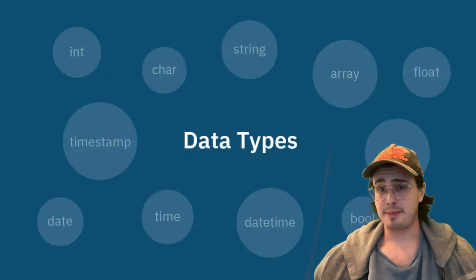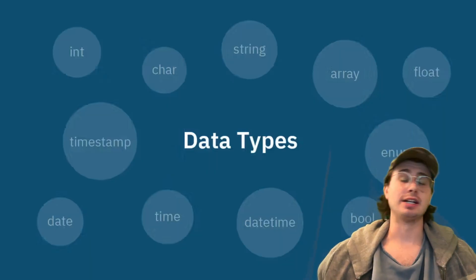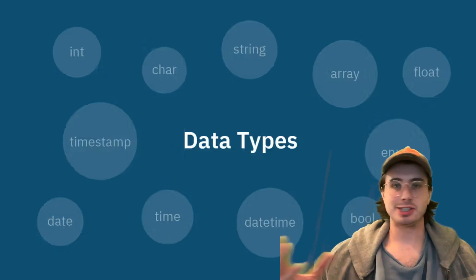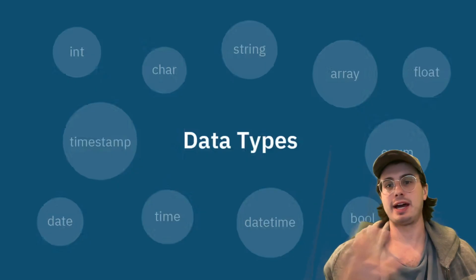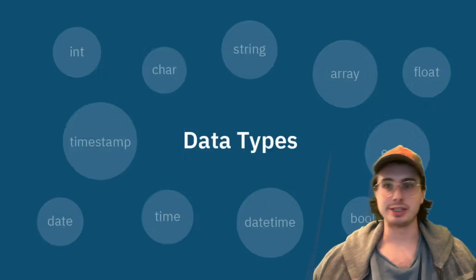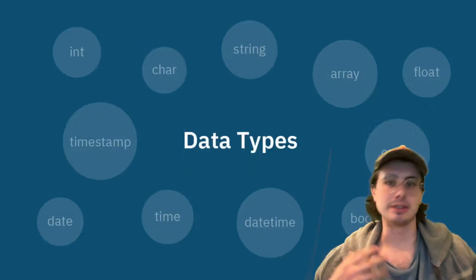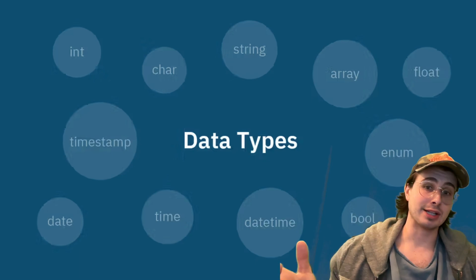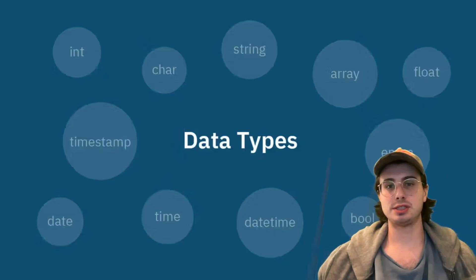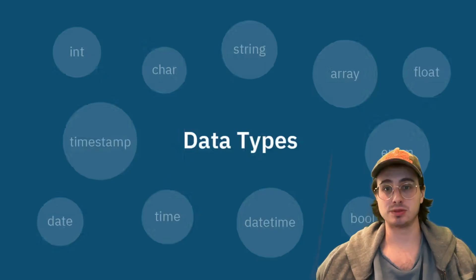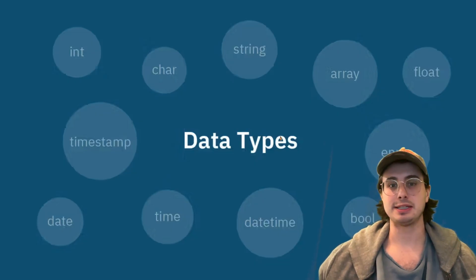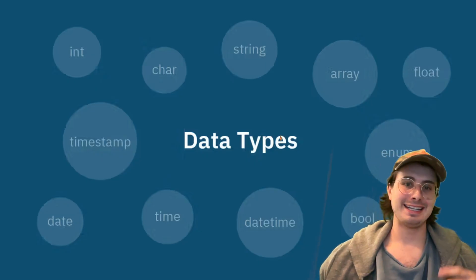The next topic is choosing appropriate data types. For example, for customer ID, choose integer if you expect millions of customers, but bigint for enterprise scale. For names, varchar(100) allows flexibility while preventing excessive storage. The guidelines are to use the smallest data type that accommodates all possible values, consider future growth, but don't over-engineer to an extreme degree.